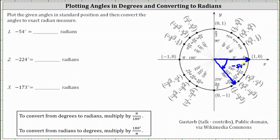To convert an angle from degrees to radians, we multiply by pi divided by 180 degrees. We write negative 54 degrees as a fraction with a denominator of 1, and then multiply by pi divided by 180 degrees. Before multiplying, let's simplify. The units of degrees will simplify out, and the greatest common factor between 54 and 180 is 18. There are ten 18s in 180, and there are three 18s in 54.